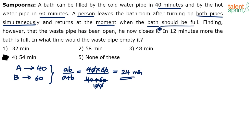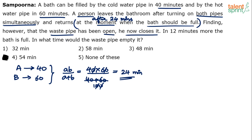This person returns at the moment when the bath should be full, meaning he returns after 24 minutes. After returning, he finds that the waste pipe has been open — there was another pipe, the waste pipe, which was left open. He now closes it. So he realizes one more pipe had been kept open, and remember, the waste pipe is an outlet. The cold and hot water pipes are inlets, but the waste pipe is an outlet.